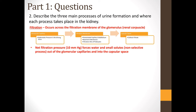The net filtration pressure, usually 10 mmHg, forces water and small solutes out of the glomerular capillaries and into the capsular space. Remember that filtration is a non-selective process — anything small enough to pass through the pores of the filtration membrane will be filtered out.